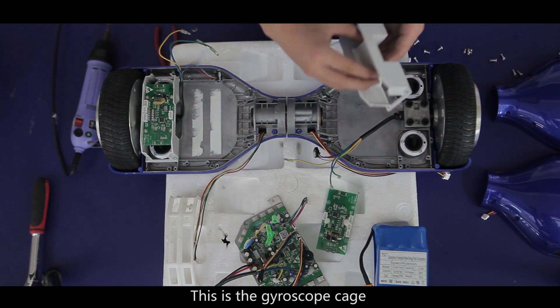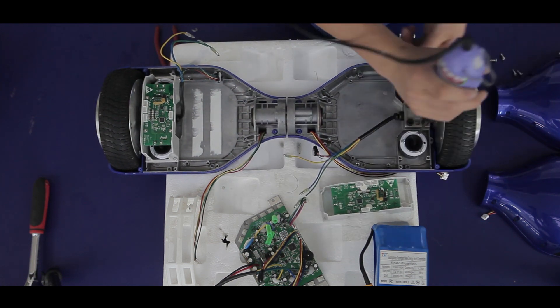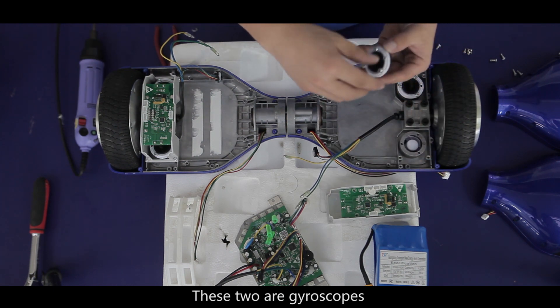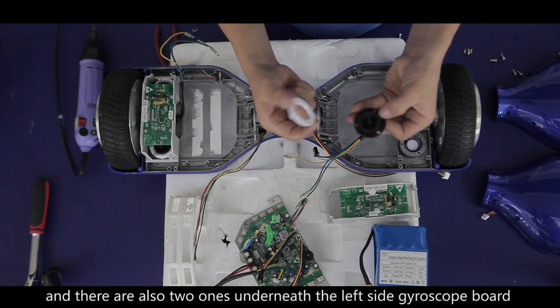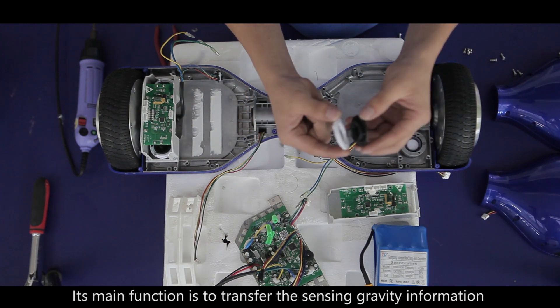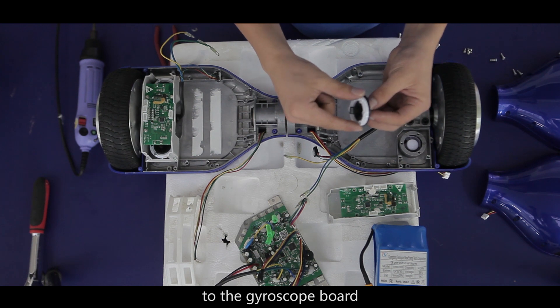This is the gyroscope cage. These two are gyroscopes, and there are also two ones underneath the left side gyroscope board. Its main function is to transfer the sensing gravity information to the gyroscope board.